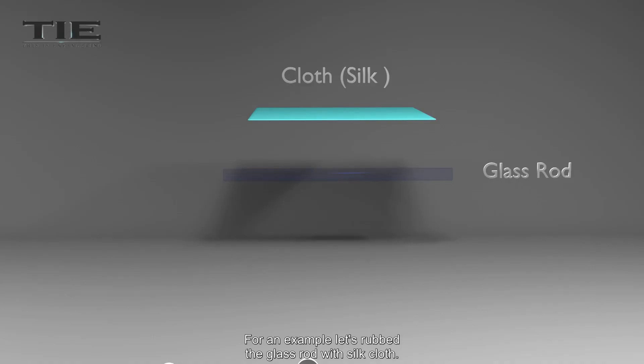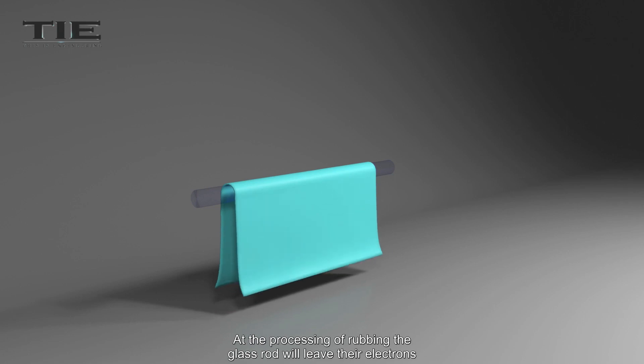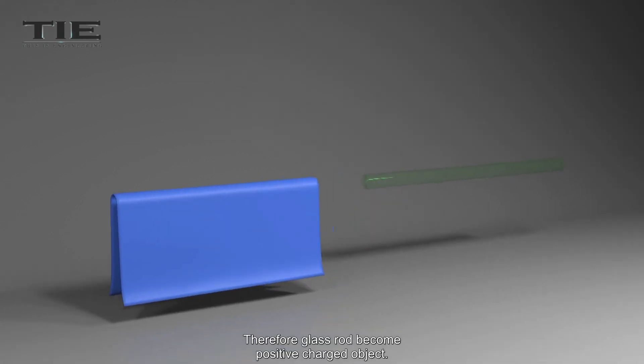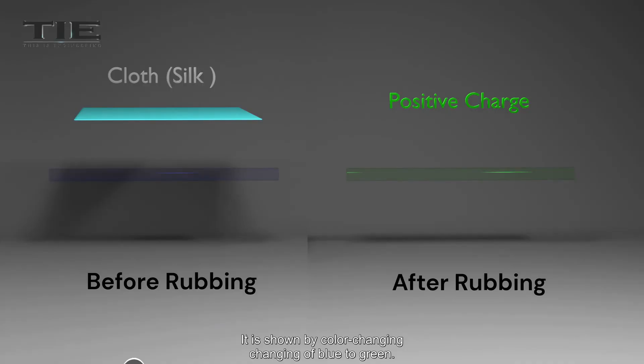For an example, let's rub the glass rod with silk cloth. At the processing of rubbing, the glass rod will leave their electrons, and the cloth will gain the electrons. Therefore, the glass rod becomes a positive charged object. It is shown by color changing of blue to green.